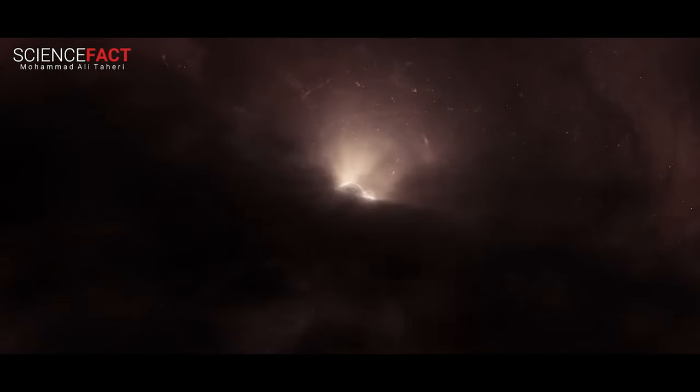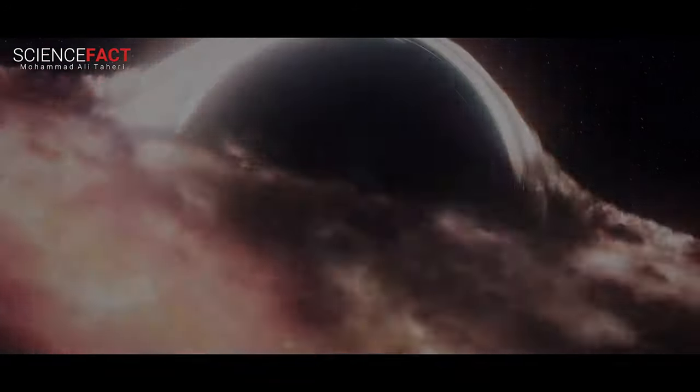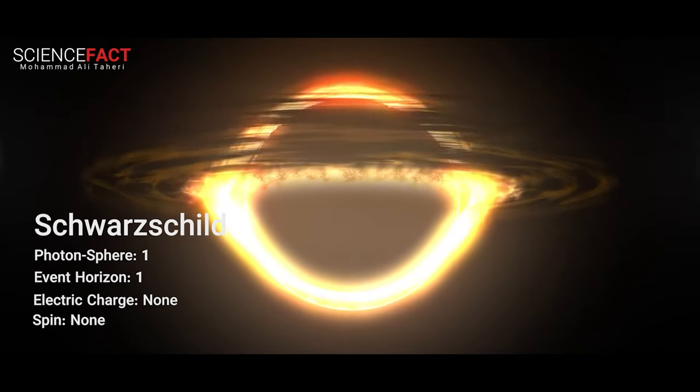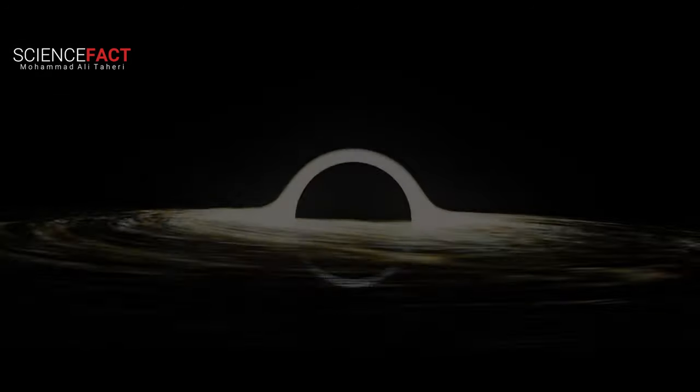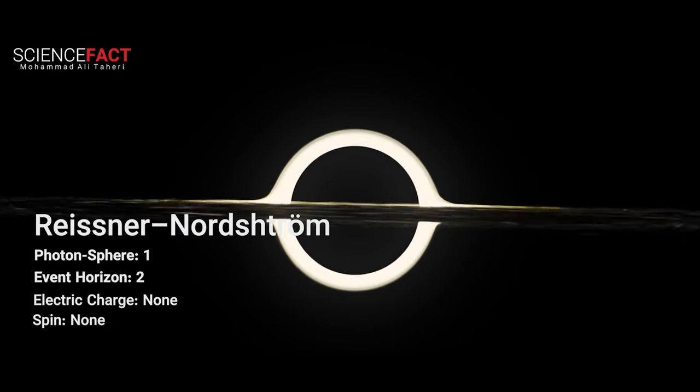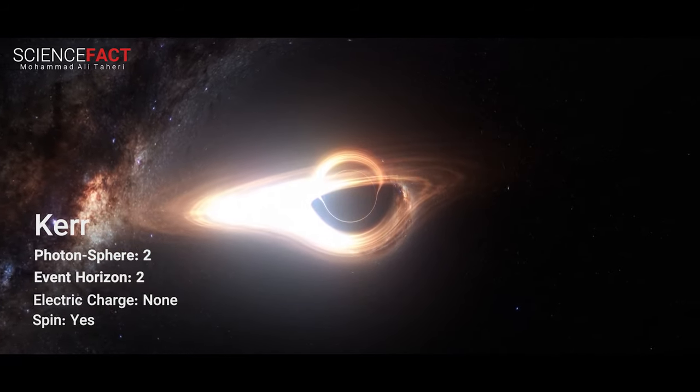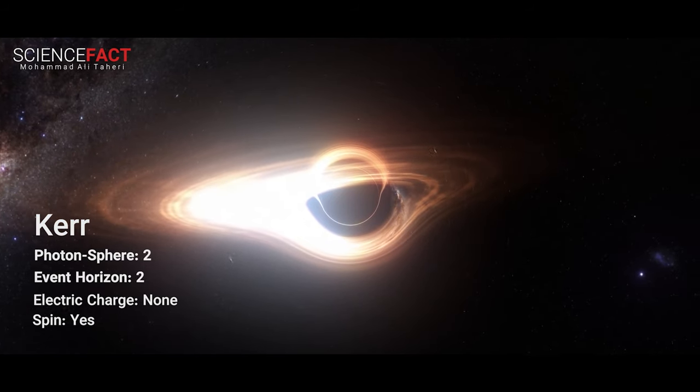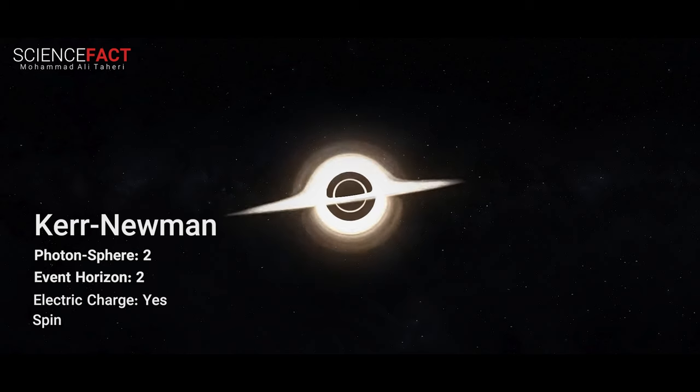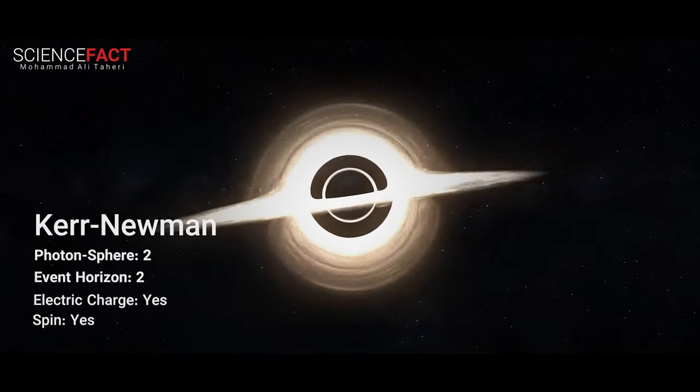There are countless black holes in the cosmos of various sizes that are classified into four categories based on their behavior. A Schwarzschild black hole: the simplest type with one event horizon and one photon sphere that has no electric charge and does not spin. The Reisner-Nordstrom: a black hole with two event horizons and one photon sphere with an electric charge and no spin. The Kerr black hole: a spinning, oval-shaped black hole without an electric charge. It has one singularity point, two event horizons, and two photon spheres. The Kerr-Newman black hole: structurally similar to a Kerr black hole with the exception of having an electric charge and a ring-shaped singularity.